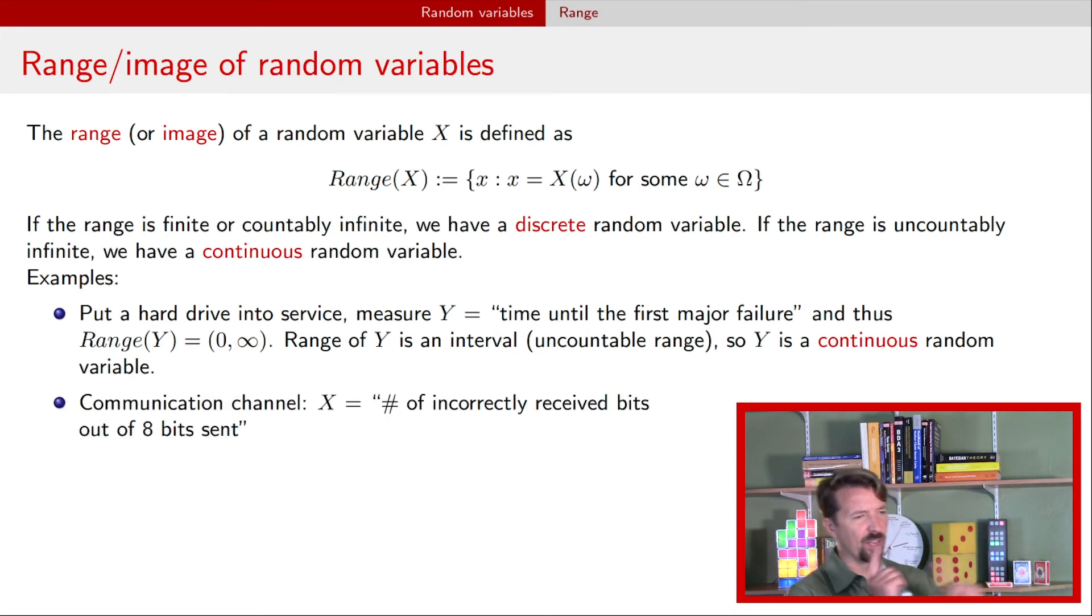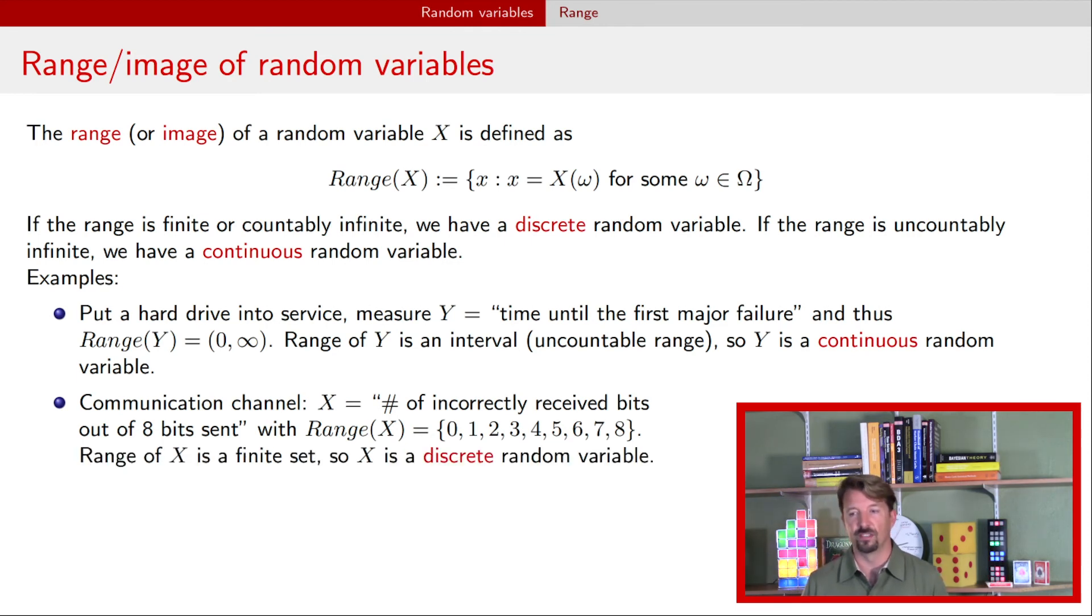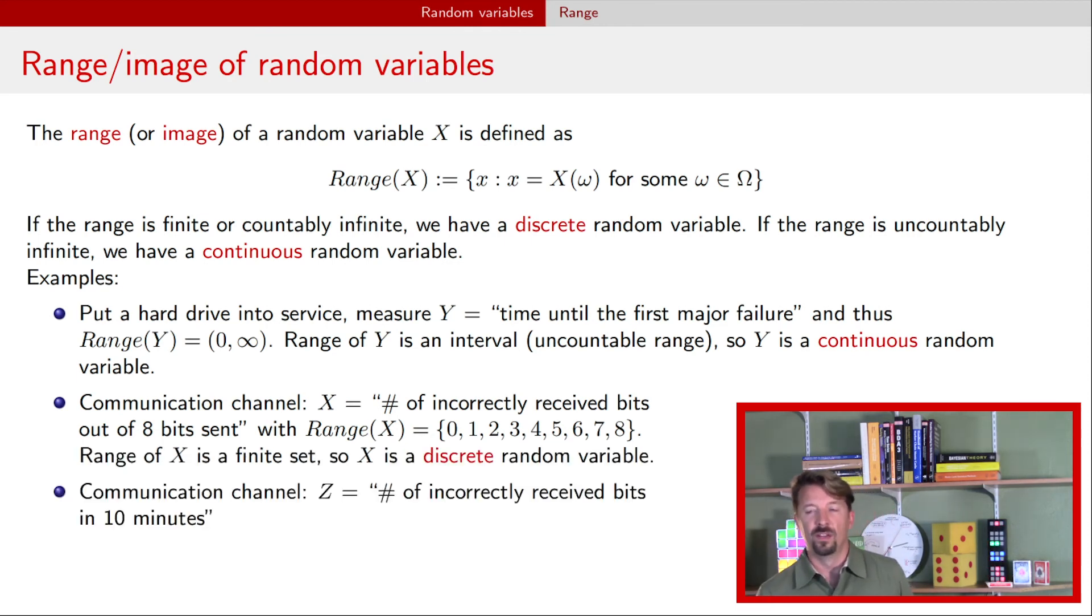How about this one? We go back to our communication channel example. We're sending eight bits and we can have possibly zero up to eight bits incorrectly received. Well, that's clearly a finite set of possible values. This range is finite because there's only nine values, zero to eight integers. And so this is a discrete random variable.